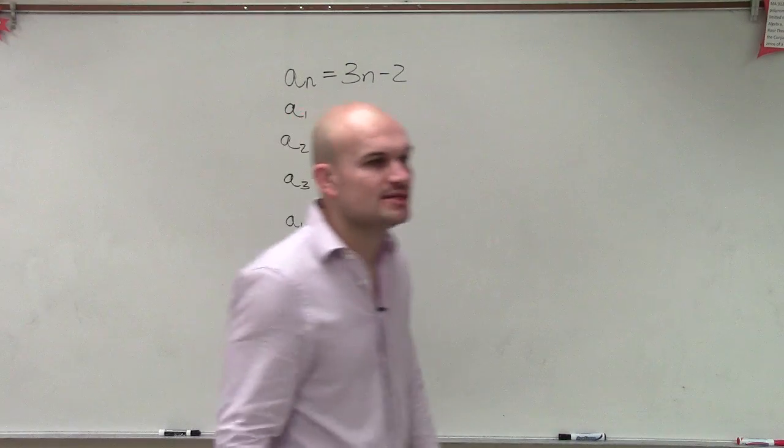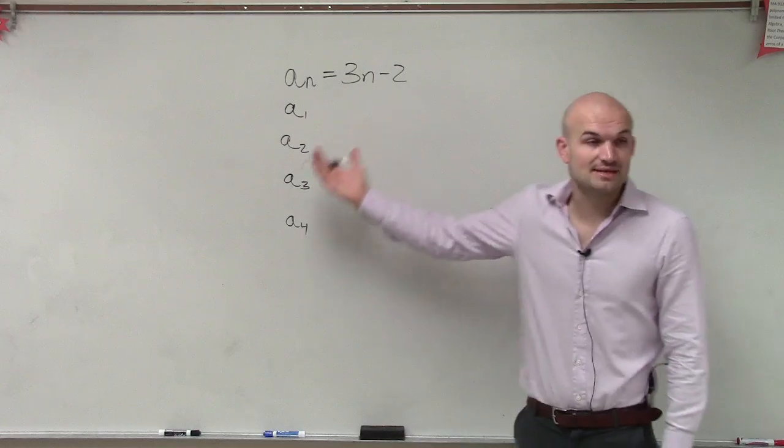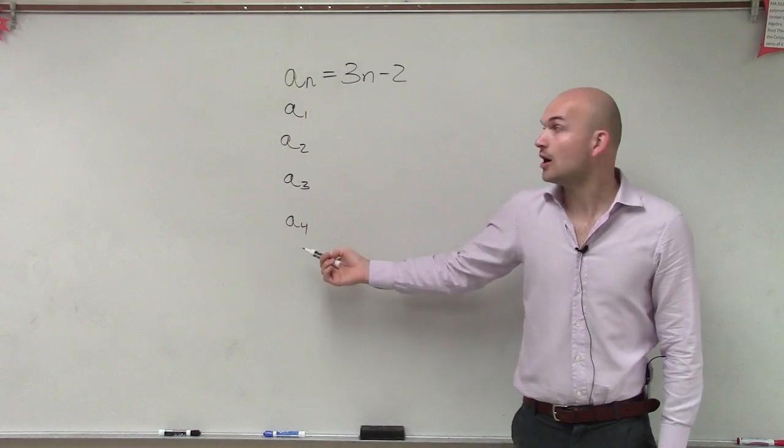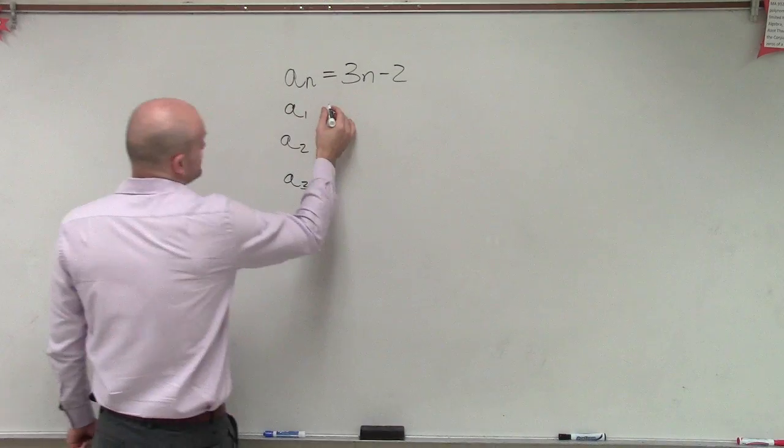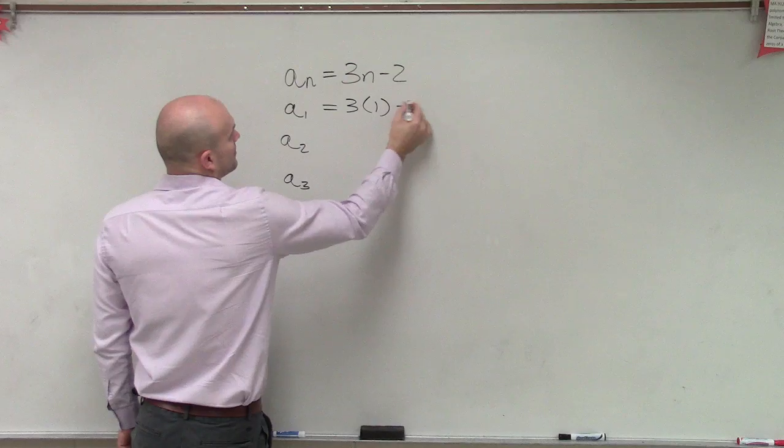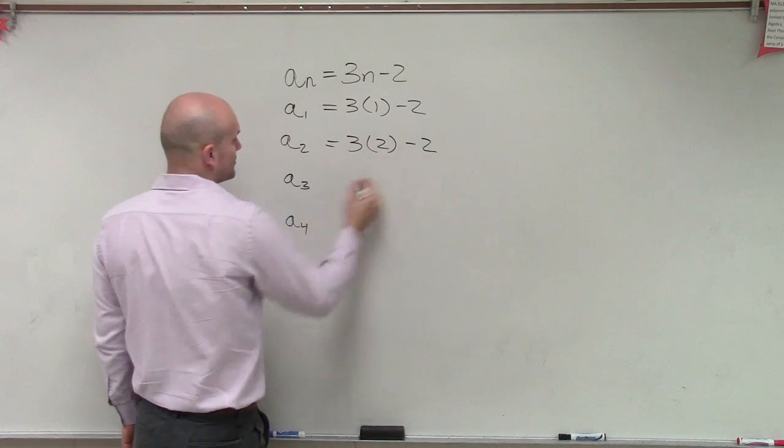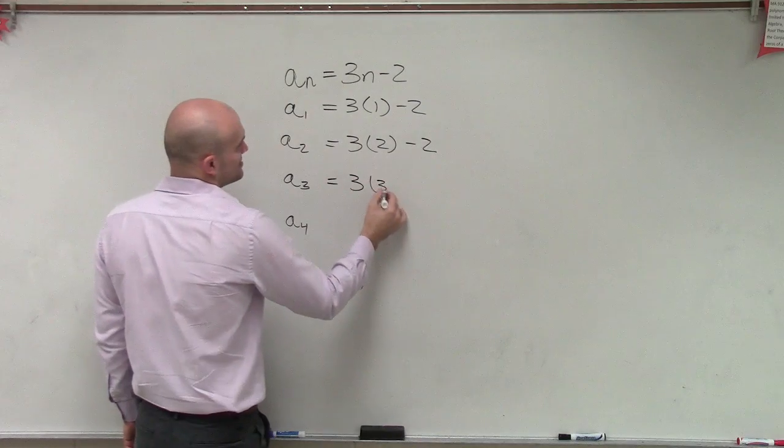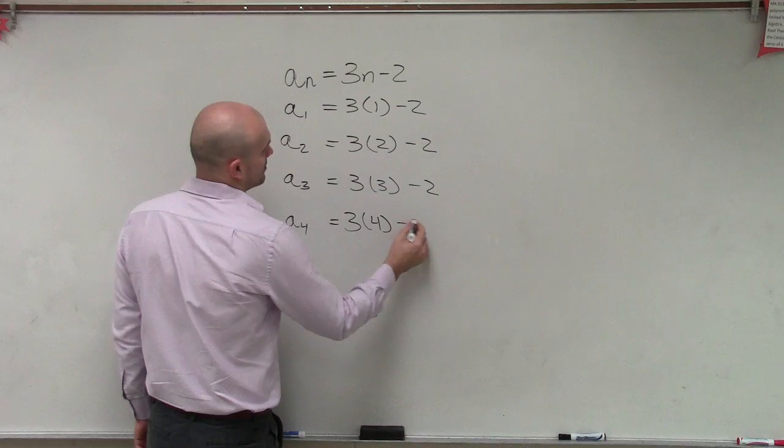Okay, so just like we talked about how it relates to function notation, all we simply need to do is plug in our term into each one of our sequence. So now it's going to be 3 times 1 minus 2, 3 times 2 minus 2, 3 times 3 minus 2, and 3 times 4 minus 2.